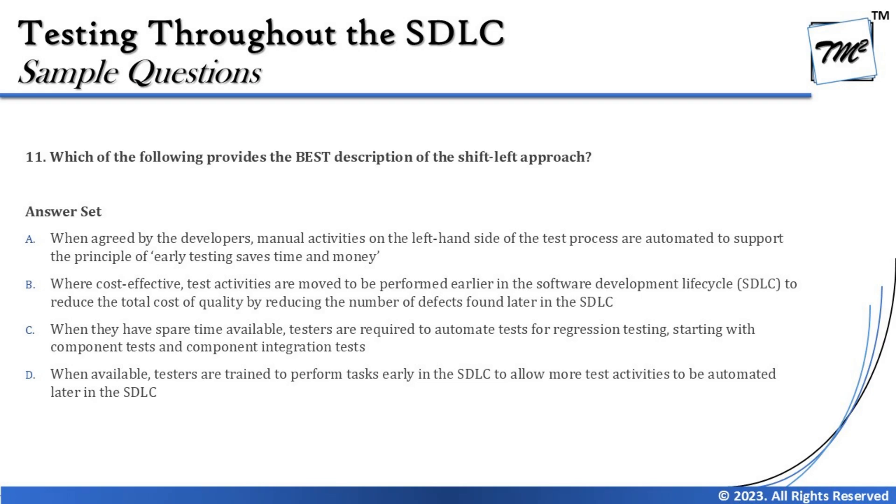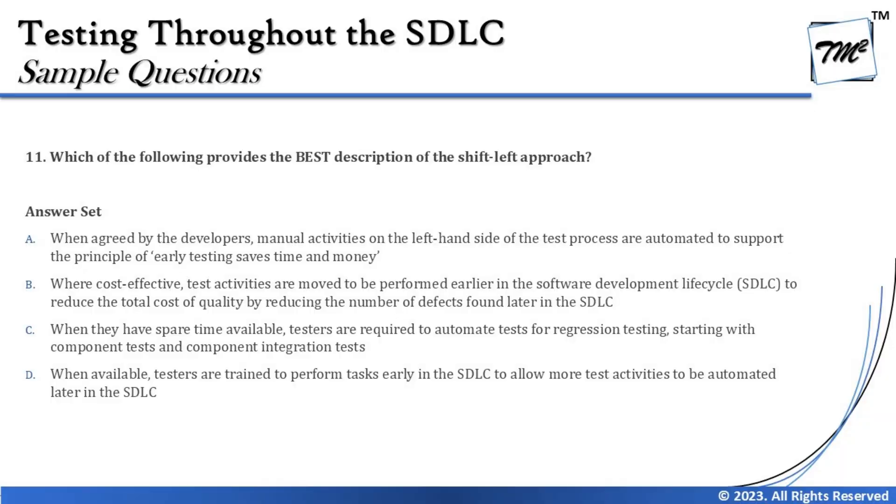The next question is number 11, which asks: which of the following provides the best description of the shift left approach? The shift left approach is where you try to prepone an activity earlier than its regularly scheduled time. Activities that naturally happen early in the lifecycle are not called shift left — only those explicitly moved earlier qualify.